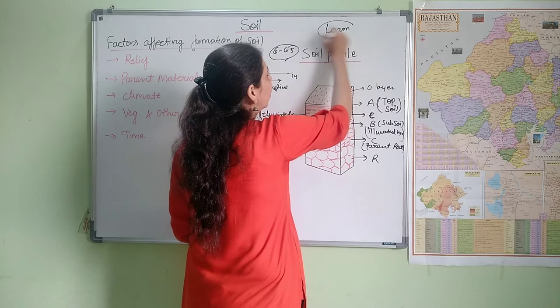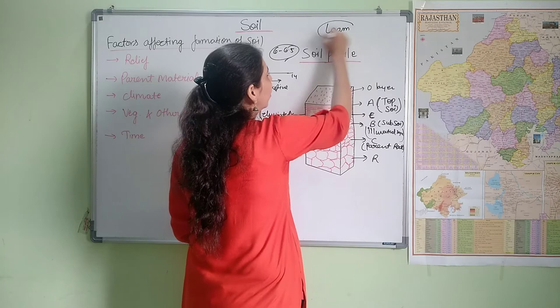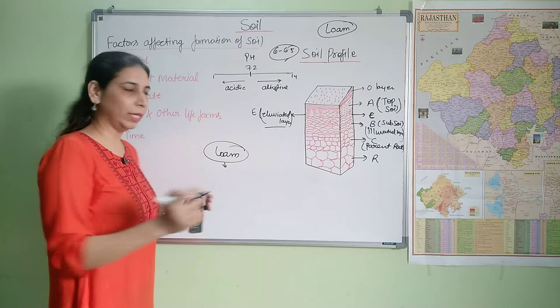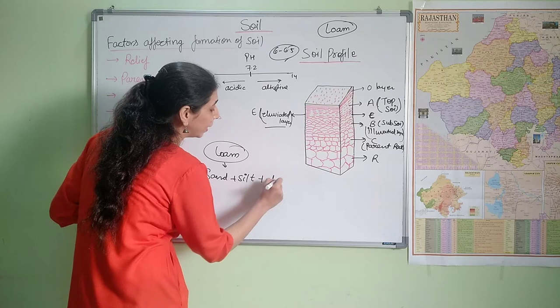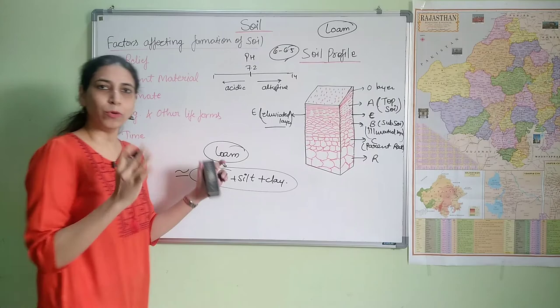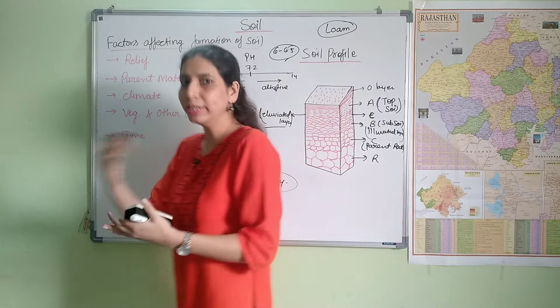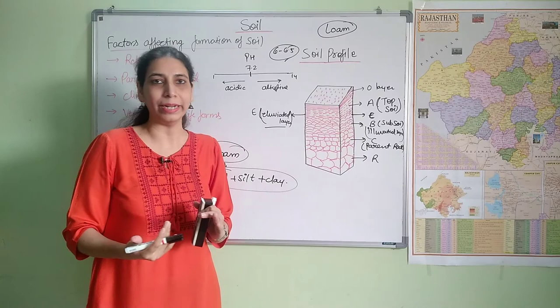One more thing — you may have heard the word 'loam.' What is loam? Loamy soil means that sand, silt, and clay are present in approximately equal proportions. That is called loam. Farmers generally prefer sandy loam texture, and the clay content should be less than 30 percent.